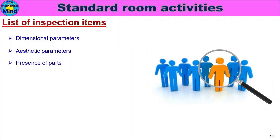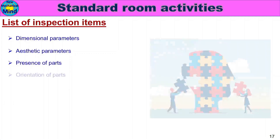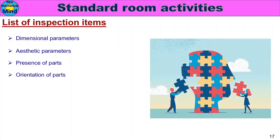Presence of parts — in an assembly product, all parts must be assembled. Orientation of parts — parts must be assembled in the correct direction and in the correct position.